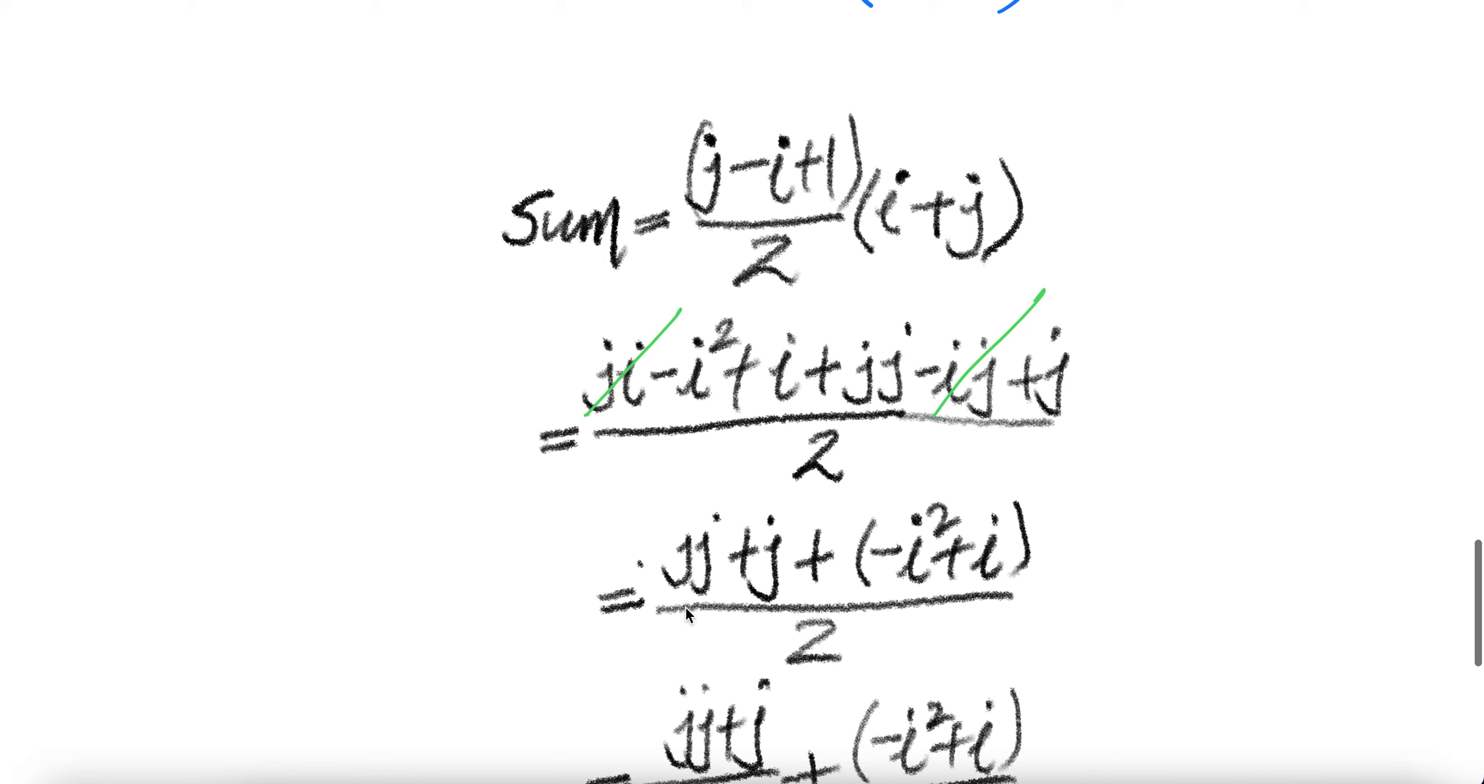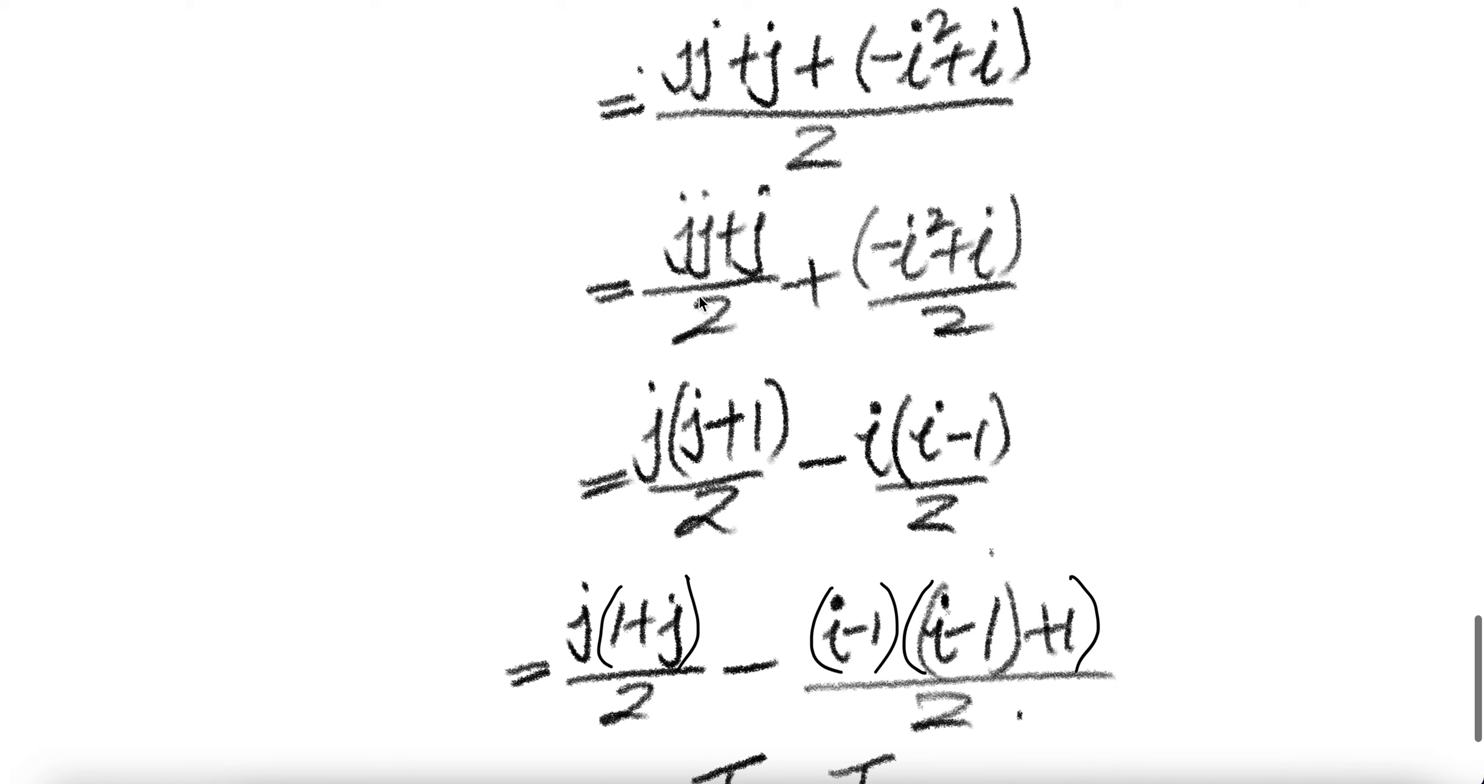And then J squared put it here, plus one J here, plus minus I squared here, plus I. You can write this as two sums: this divided by two and this divided by two. Factor out the J, you get J for this one plus one. Factor out the minus I, you get I for this one minus one for that.